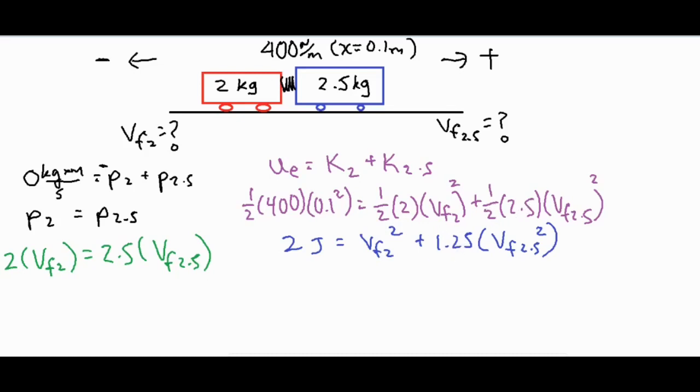Since we currently have two unknowns that is a little bit of a problem, but we can go ahead and do a little bit of a system of equations and solve for vf2 by dividing both sides by 2. And 2.5 divided by 2 is going to be 1.25 times the vf there.